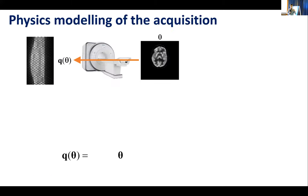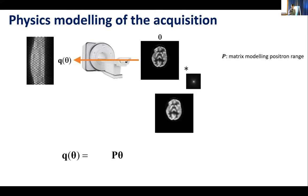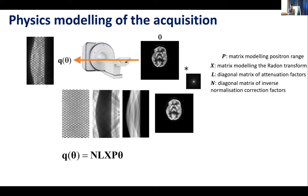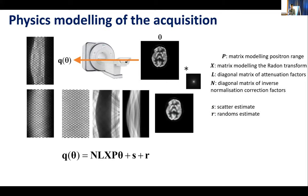So there's the physics of the acquisition. We go from an image to a model of the mean of the data that you would have acquired if that image had been inside the field of view. We have positron range, good old line integrals — the so-called x-ray transform or Radon transform, discrete version here — then attenuation, normalization, scatter and randoms. That builds up this affine transform, this system matrix plus offset operating on your current image estimate to give a model of what the data would have been if that image had been inside the scanner.